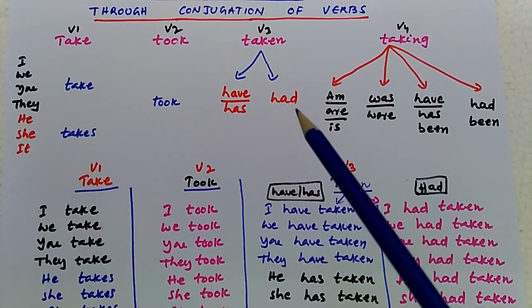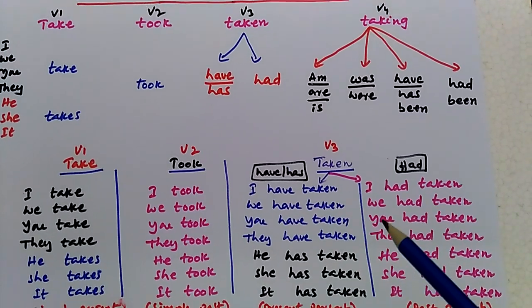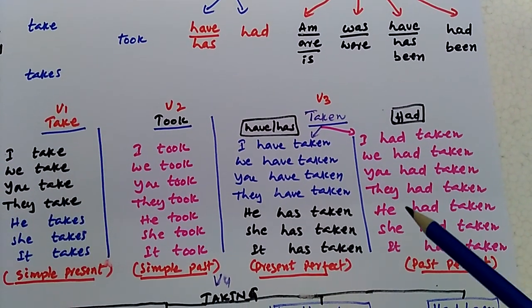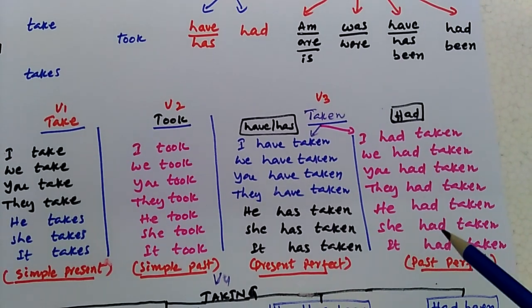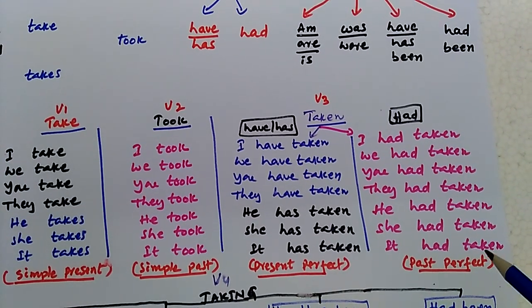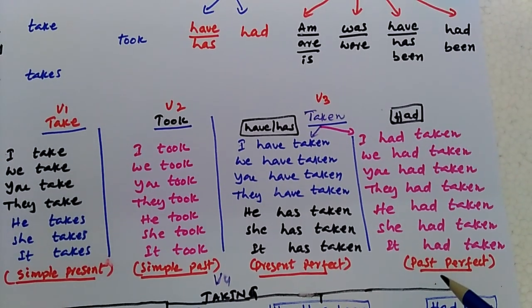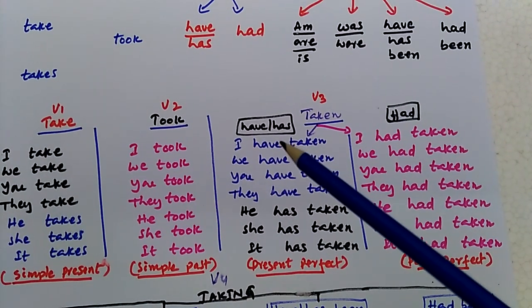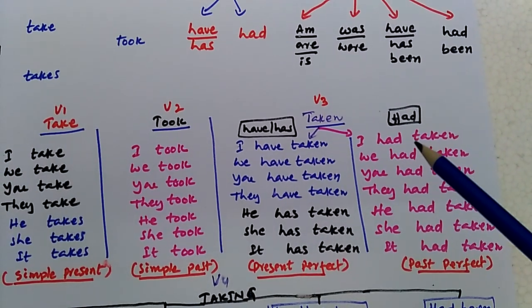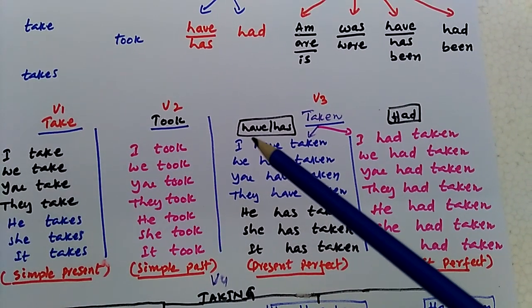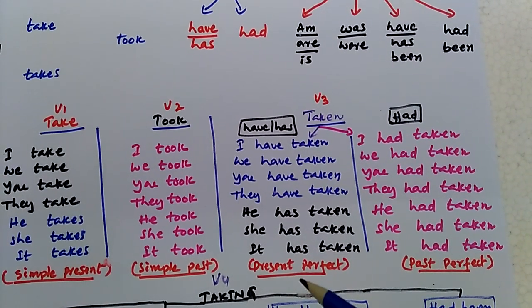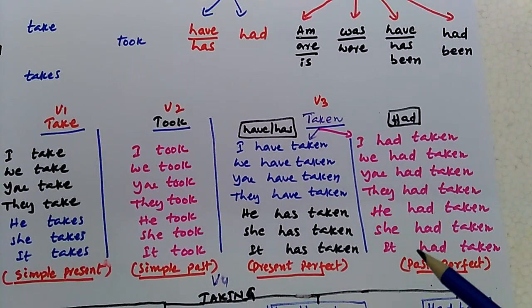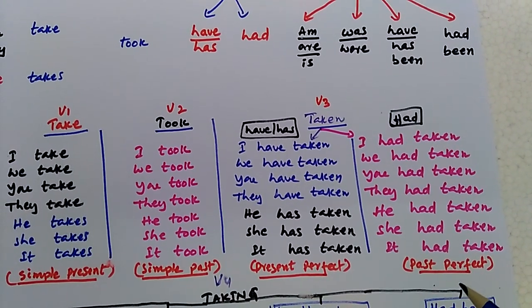And by adding had, we get another table: I had taken, we had taken, you had taken, they had taken, he had taken, she had taken, it had taken. This is called past perfect. So for verb three, we need to add has, have, or had. By adding have or has we get the present perfect table; by adding had to verb three, we get the past perfect table.